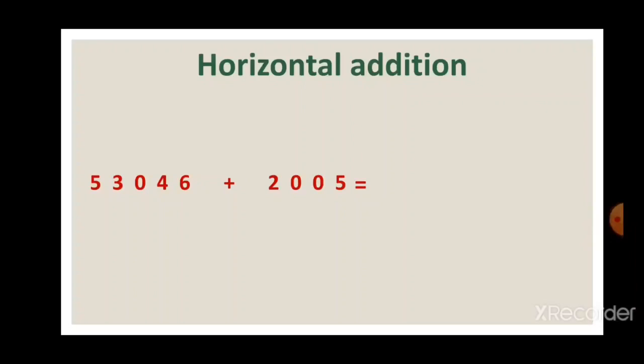Whenever there is a carry over, we have to keep that number in our mind. Let's start with the unit place. Here you can see 53,046 plus 2,005. First we add units to units: 6 units plus 5 units makes 11 units, so we write 1 in the unit place and keep 1 in our mind.